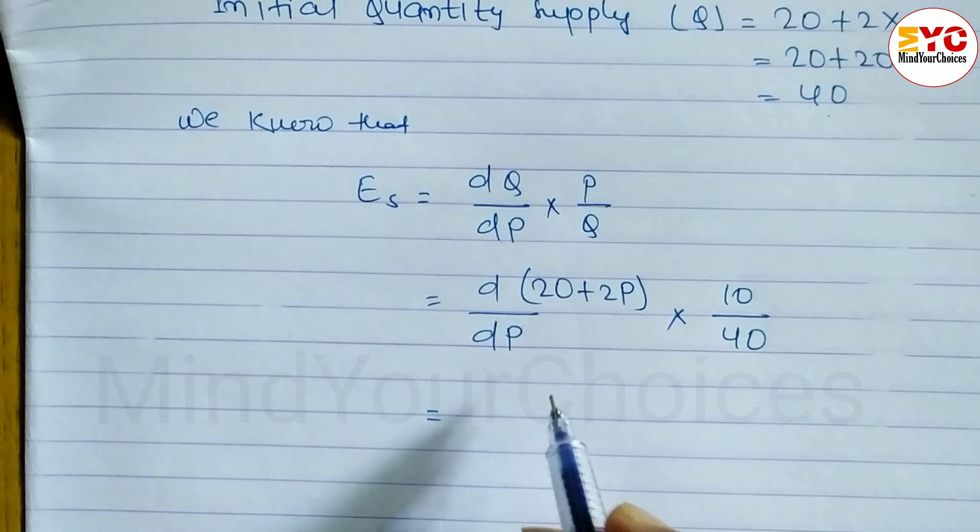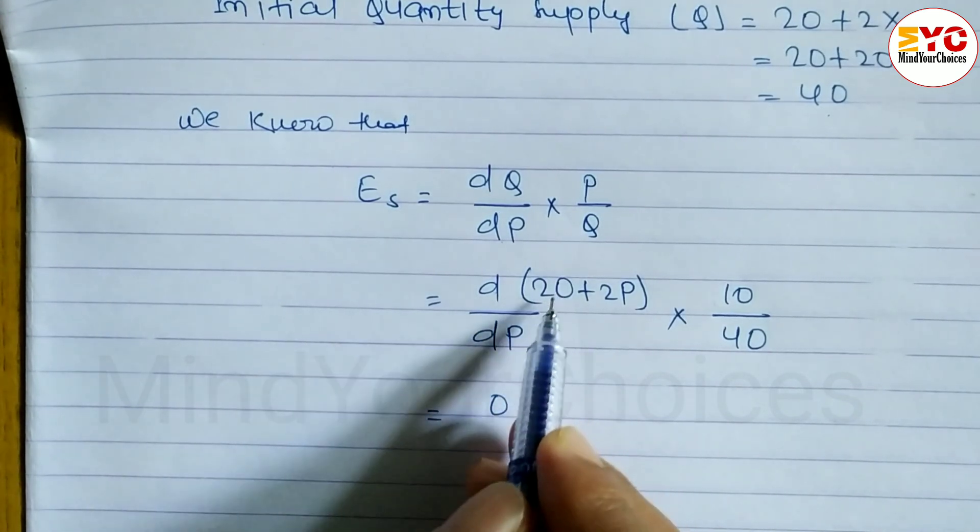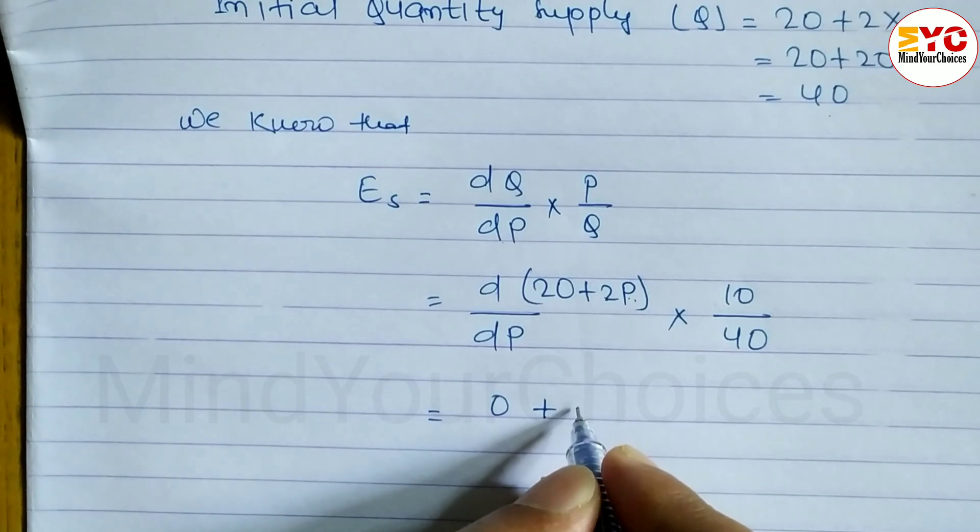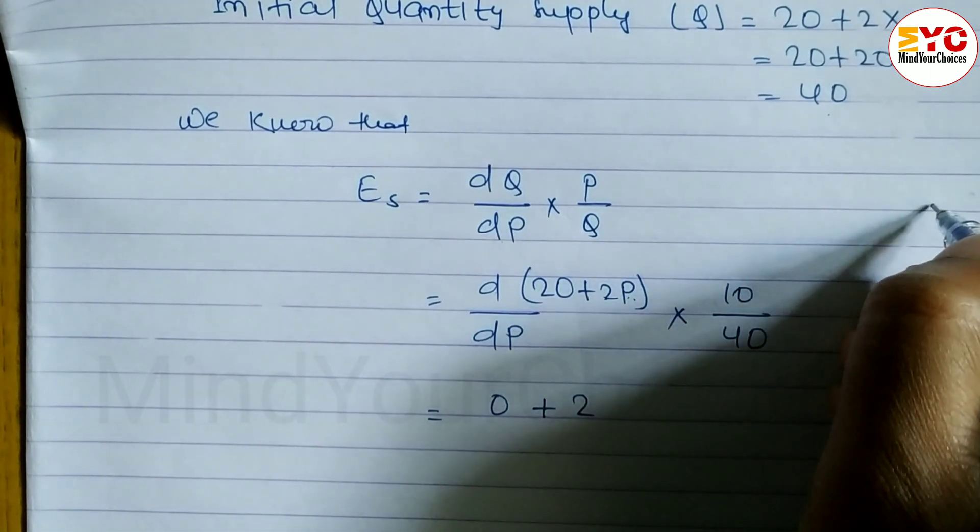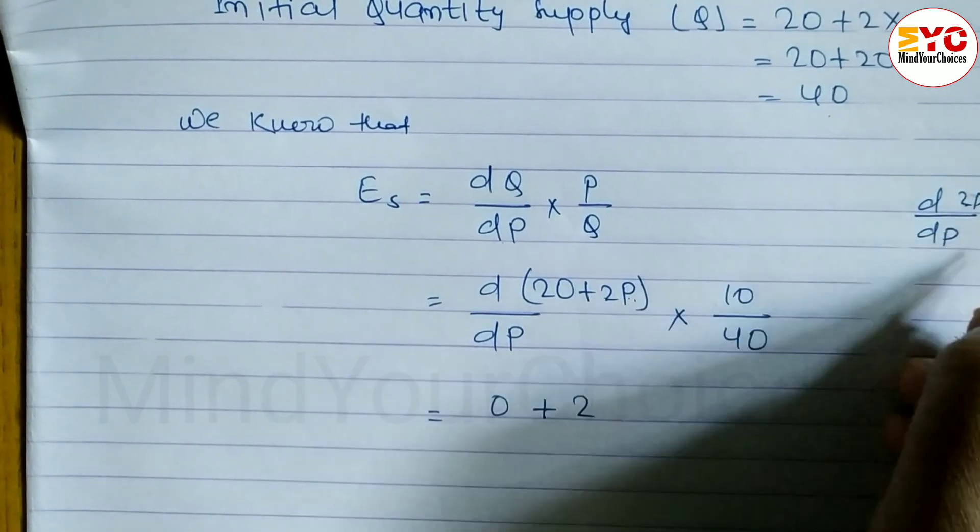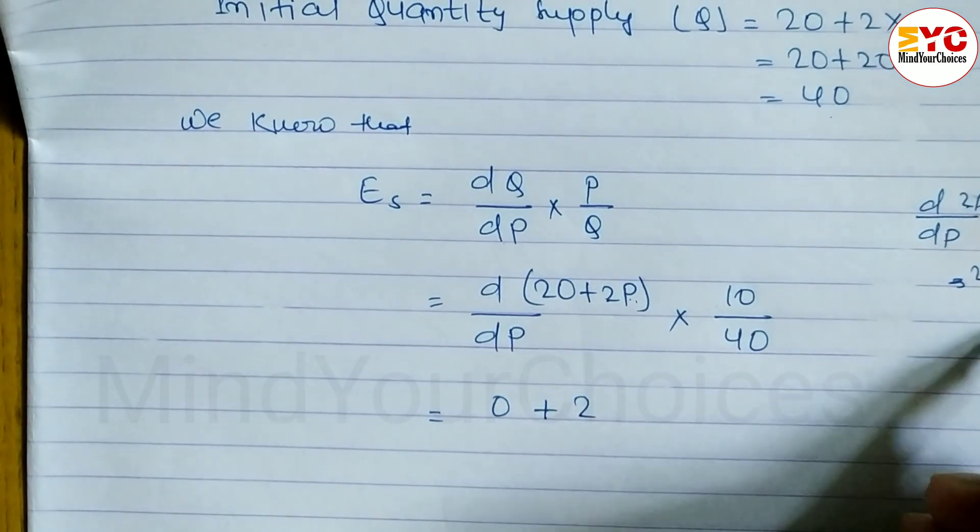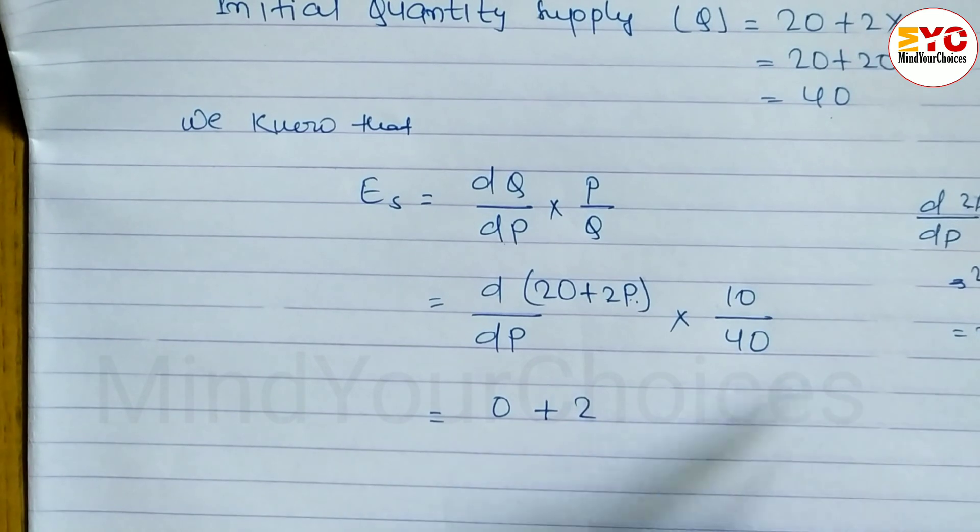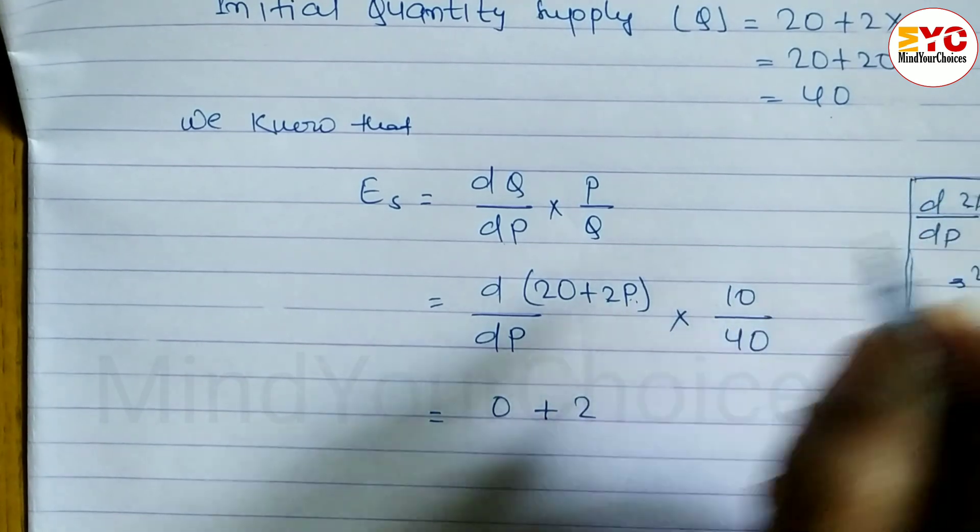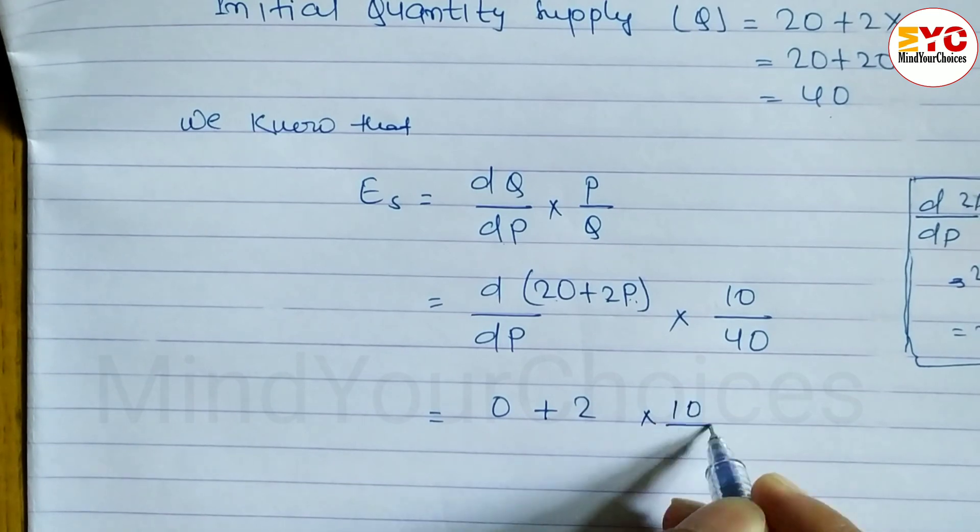After this, find out the derivative of this one. What is the derivative of 20? Derivative of 20 is 0. Derivative of any constant number is equal to 0 plus derivative of 2P. So derivative of 2P is 2. So you can see here, D by DP, derivative of 2P: this two constant number will come from and remaining DP by DP, derivative of P with respect to P is equal to 1. So 2 into 1, that's why we have to write here 2. And derivative of any constant number, 20 is equal to 0. So 0 plus 2 into 10 by 40.